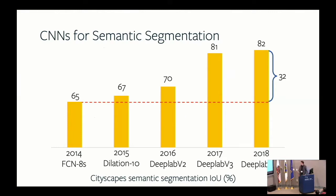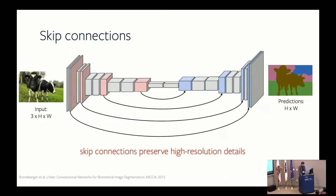In the last four years computer vision made significant progress in semantic segmentation, going from 65 to 82 mean IoU. We learned that skip connections are important: if you go through a bottleneck, objects smaller than 32x32 pixels can disappear entirely. Using skip connections — concatenating or summing features from earlier layers — brings high-resolution local context back and improves recognition quality significantly.